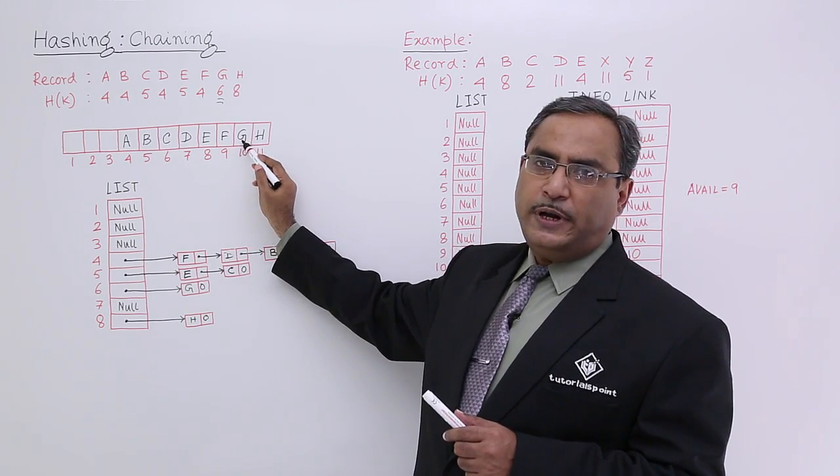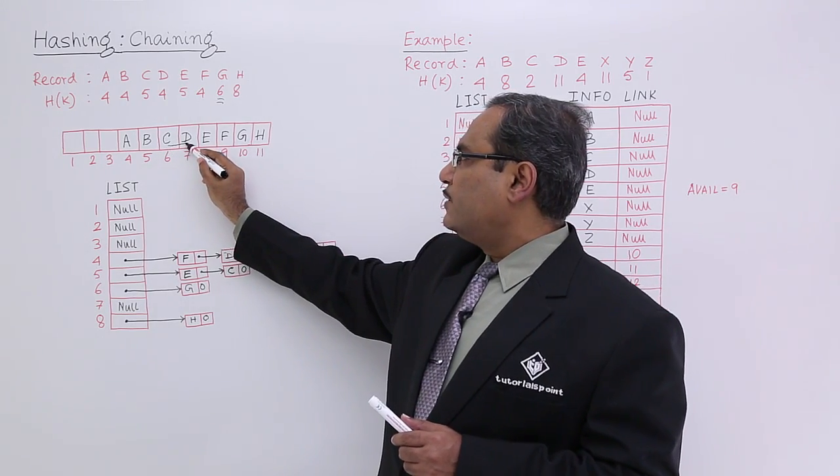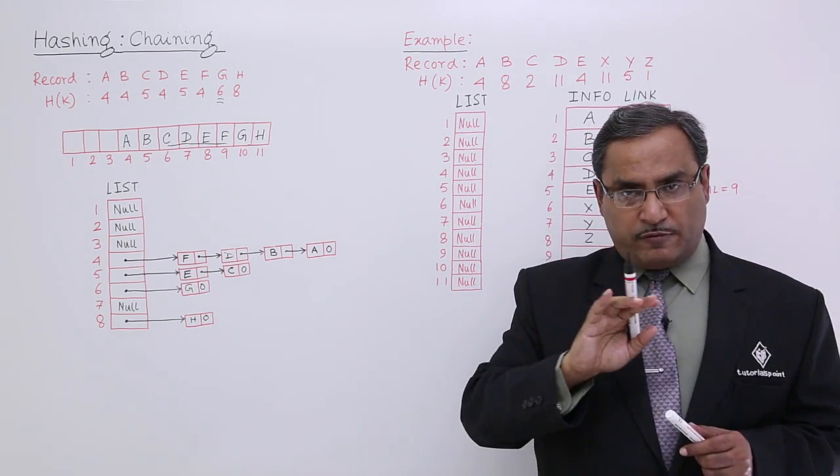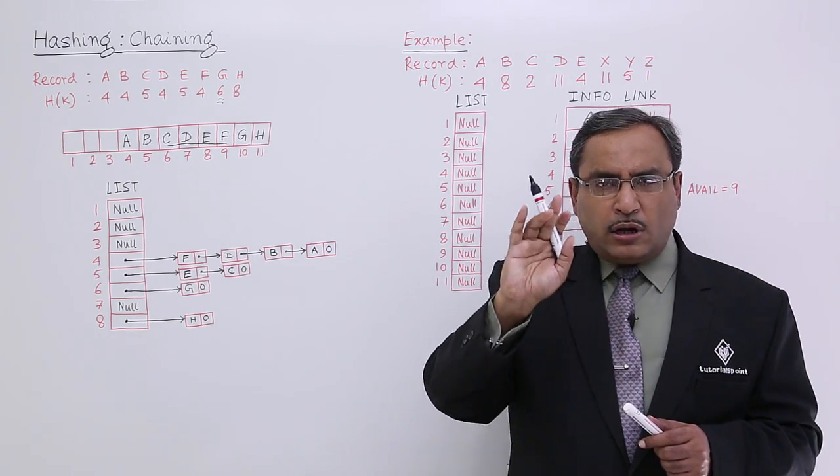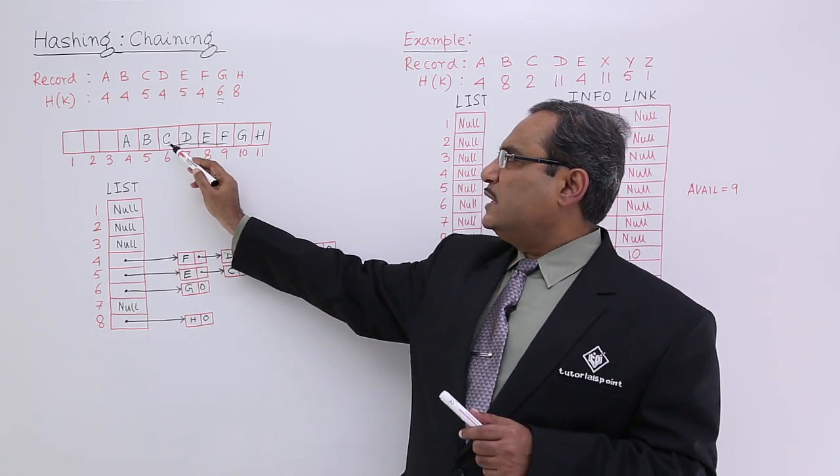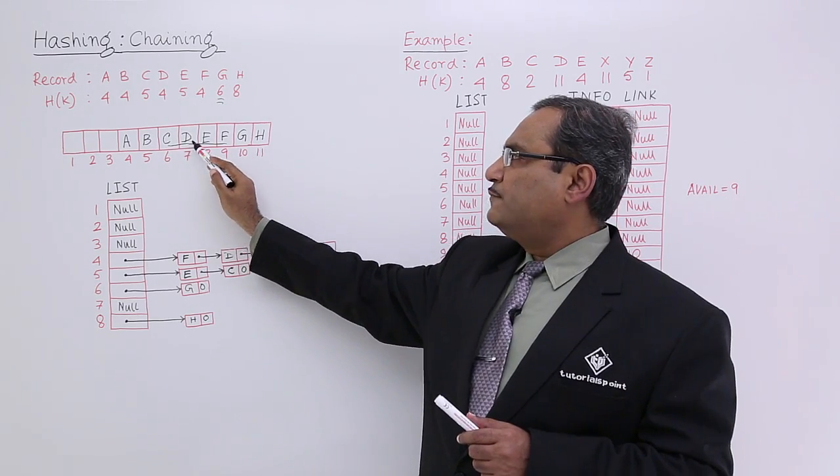But unfortunately, whatever the nodes we have traversed, whatever the locations we have traversed and matched, they are not having the H of K 6. So here we are searching on those records whose H of K is not 6, either 4 or 5.